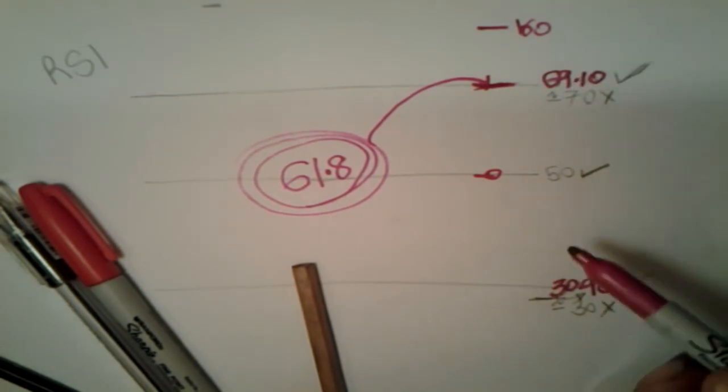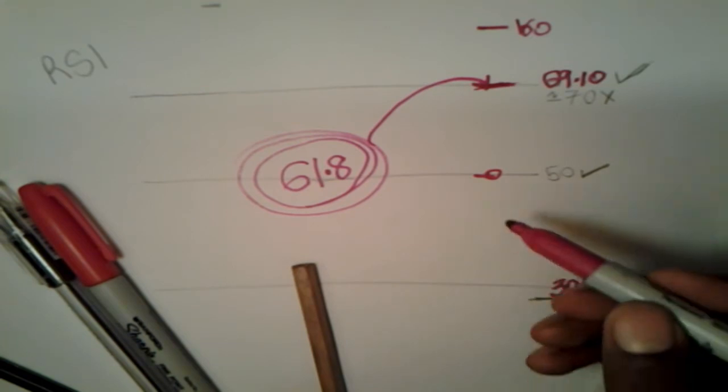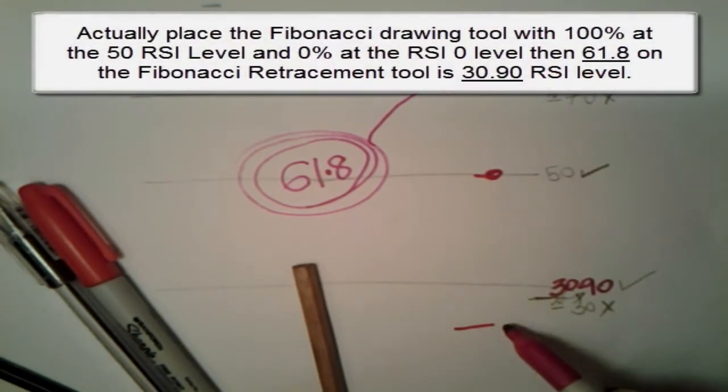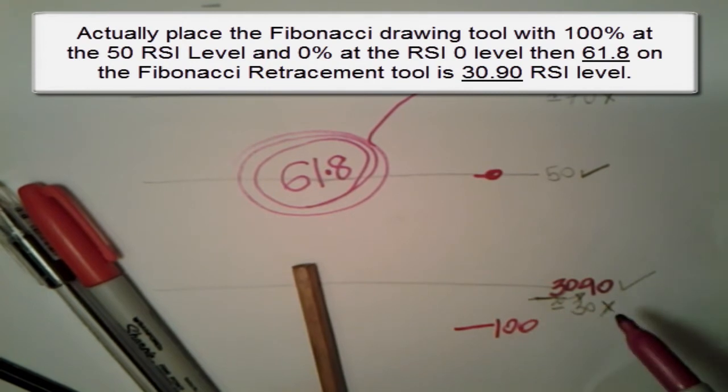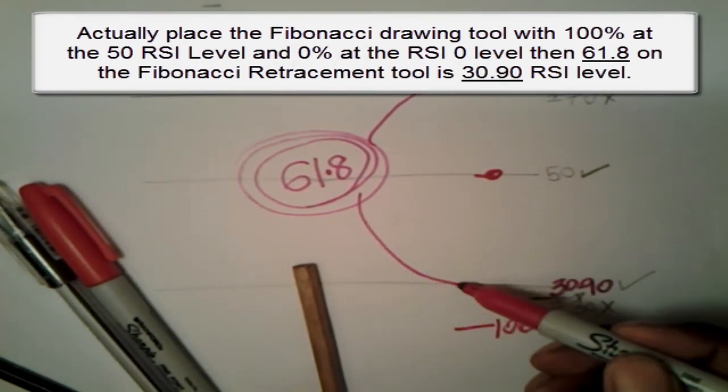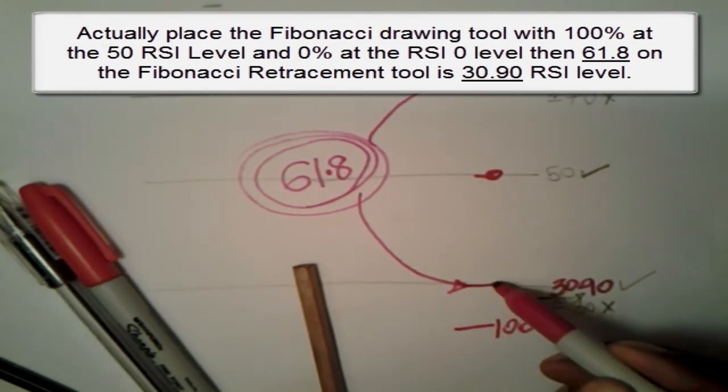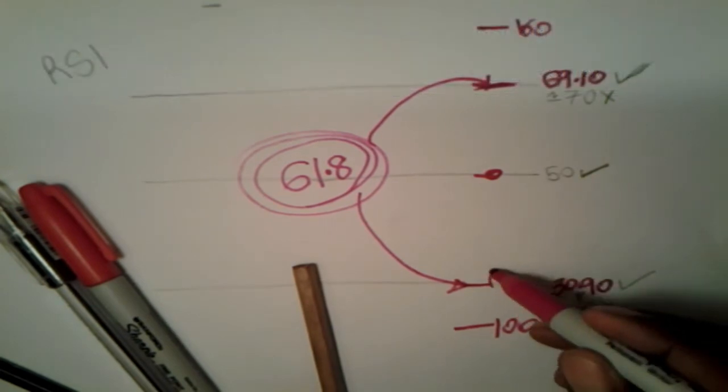If you flip it and go the other way around, if you put 0 here and 100 here on the Fibonacci retracement tool, you will find that right here at 61.8 on the Fibonacci retracement tool is where you get 30.90.